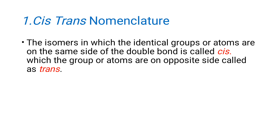What is cis-trans nomenclature? The isomers in which identical groups or same atoms are attached on the same side of the double bond are known as cis isomers. When the atoms or groups are on the opposite side of the double bond, they are termed as trans isomers.